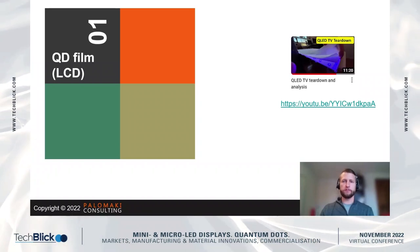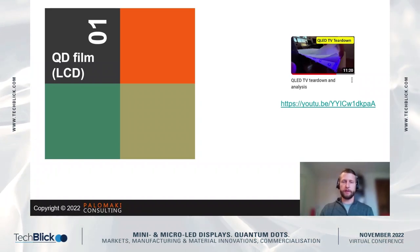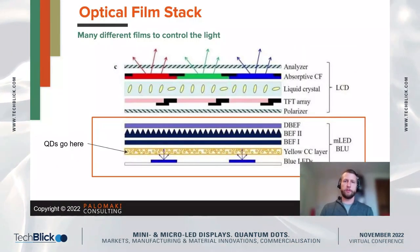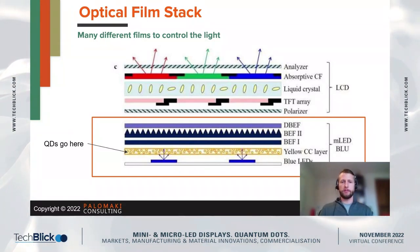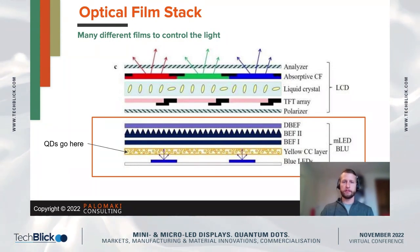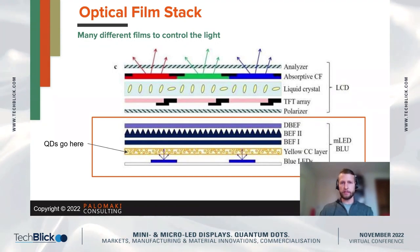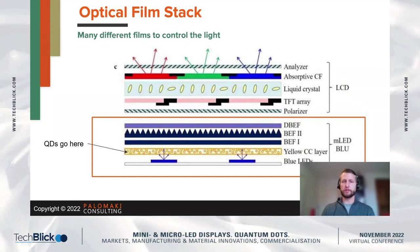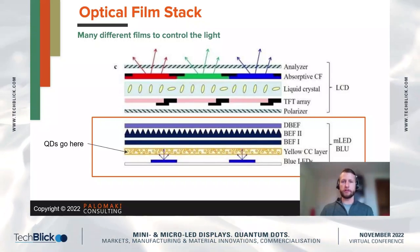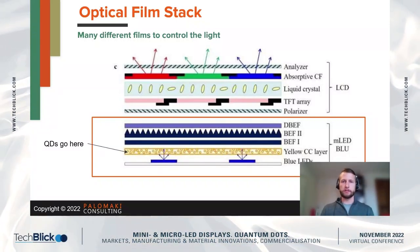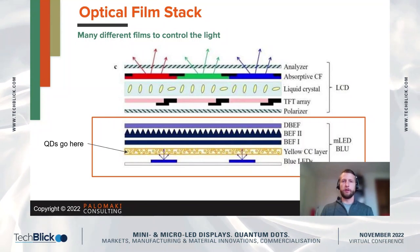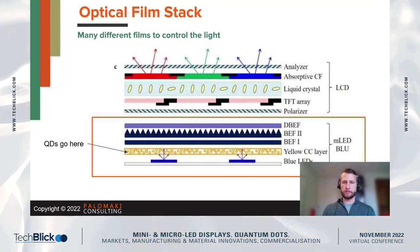First, a QD film in an LCD. This is by far the most common way that quantum dots are implemented in a display. You can see in the diagram here that quantum dots exist as a plastic film in the backlight unit, in front of the blue LEDs typically. These blue LEDs excite the quantum dot film, which down-converts the blue into red and green light. Then there are various optical layers in this film stack before the light reaches the liquid crystal and finally the color filters at the front of the display.